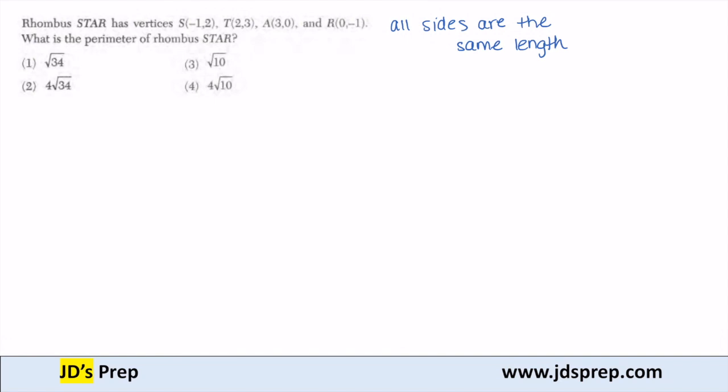So if I can find one side, all I have to do is multiply that by 4. The perimeter is 4 times the measure of one side because the rhombus has 4 sides and they're all going to be the same measure.